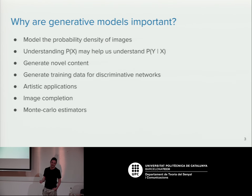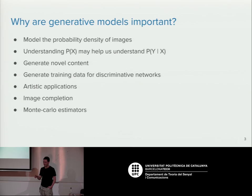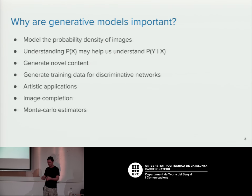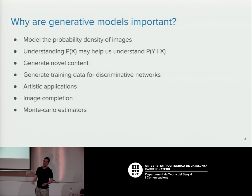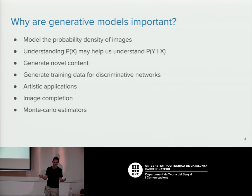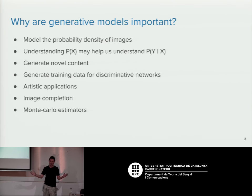Some recent work has looked at using generative models to generate training data for classifiers. Video games are a useful way to generate training data because you can generate examples of things in various orientations. But the problem is these aren't samples from the real world — a classifier can learn to cheat by picking up details specific to video games. What you can do then is use a GAN to generate more realistic samples conditioned on those images but looking like real-world content, and use that as training data.